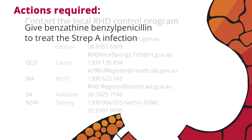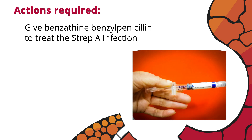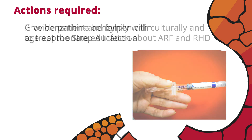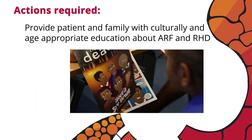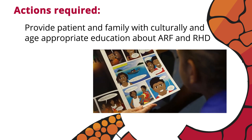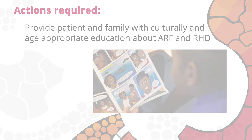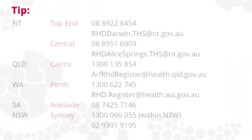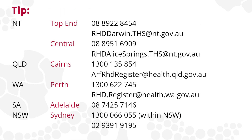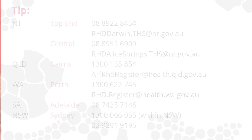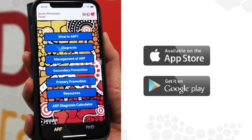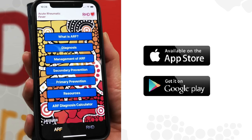Give benzathine benzylpenicillin to treat the Strep A infection. Provide the patient and family with culturally and age-appropriate education about ARF and RHD. Tip: find contact details for jurisdiction RHD control programs and access key information on the free ARF and RHD guideline and diagnosis calculator app. Download for free from Google Play or the App Store.